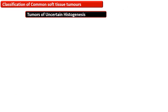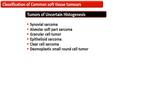The group which belongs to the tumors of uncertain histogenesis includes synovial sarcoma, alveolar soft part sarcoma, granular cell tumor, epithelioid sarcoma, clear cell sarcoma, and desmoplastic small round cell tumor.